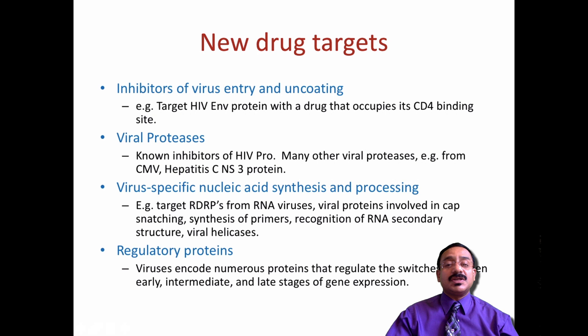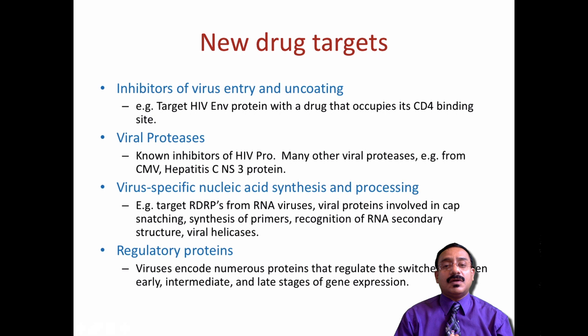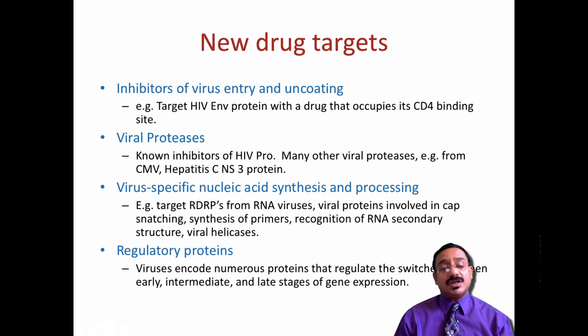Inhibitors of viral entry and uncoating: for example in HIV, there is a protein called ENV envelope protein. A drug occupies its CD4 binding site — the drug focuses on the CD4 binding site of HIV's envelope protein. The next target is viral proteases — inhibitors of HIV proteins and many other viral proteases from viruses such as cytomegalovirus and hepatitis C virus, where non-structural protein 3 (NS3) is also used as a target.